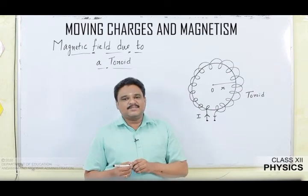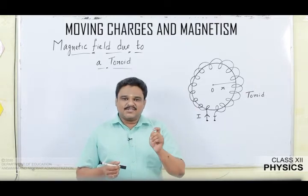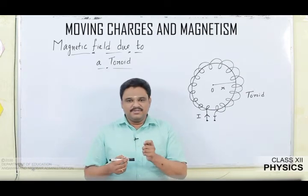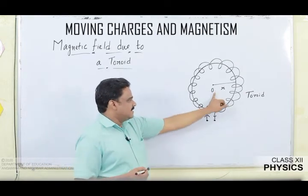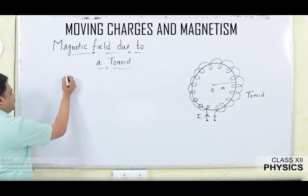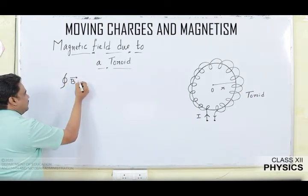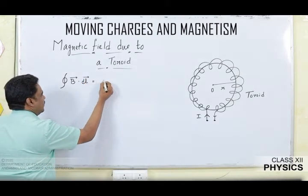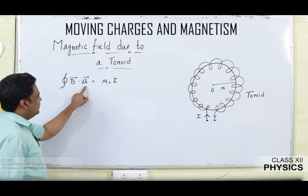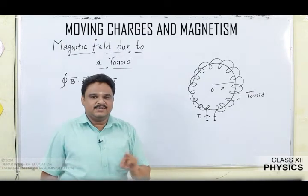With these basics, let us derive the expression. A toroid is basically a ring solenoid consisting of an anchor ring with a number of turns of metallic wire wound over it. I consider one such toroid with center O and radius R through which a current I flows. Starting from Ampere's circuital law: the line integral of magnetic field, that is ∮B·dL = μ₀I, where the right-hand side is μ₀ times the current threading through that closed path.